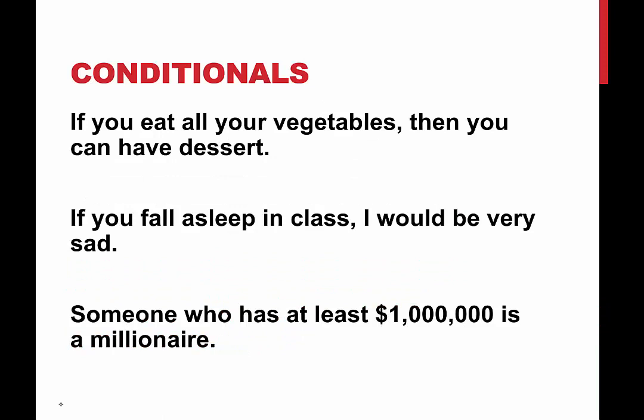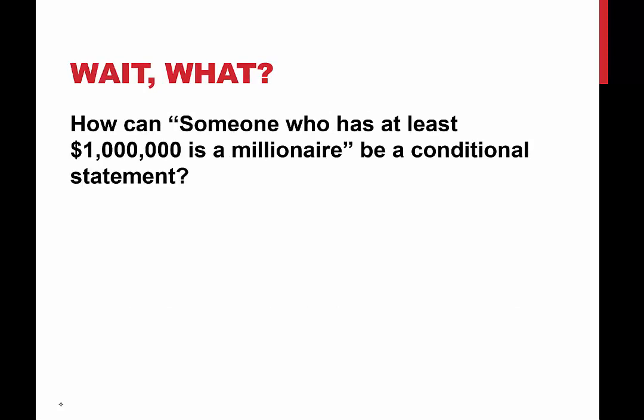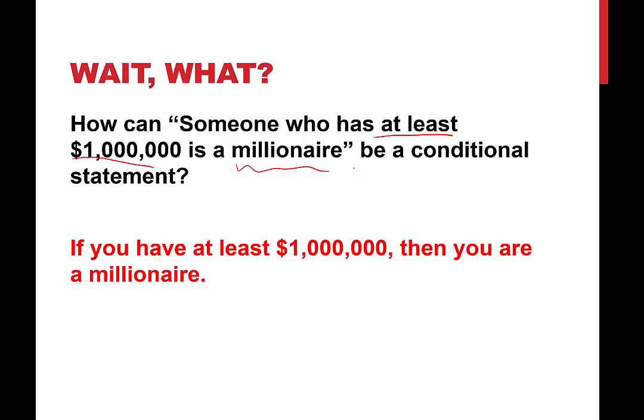Conditionals are of the form 'if...then.' For example, if you eat all your vegetables then you can have dessert — you might recall that one from your childhood. Or if you fall asleep in class I would be very sad. Also, someone who has at least a million dollars is a millionaire. We can rewrite this in if-then form: if you have at least a million dollars then you are a millionaire. So we can take sentences and rewrite them in if-then form if they're not already given to us that way.